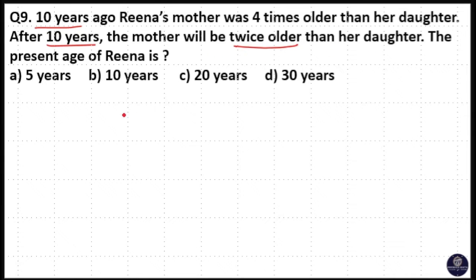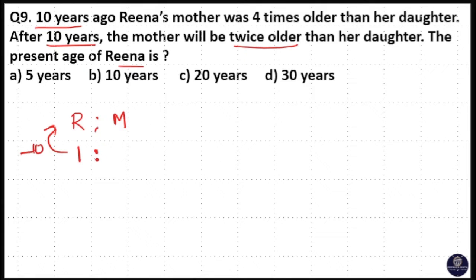Then the present age of Rina. This is Rina and this is mother. 10 years ago, that means minus 10 years. 10 years ago, if Rina was 1 year, mother would be 4 years. After 10 years, if Rina was 1 year, mother would be 2 years.